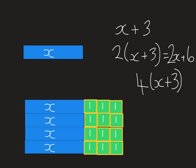So what's that overall? How many x's do I have? 4x plus how many 1's? 4 times 3. 12. Because I've got 3 here, and 4 lots of it. 4 times 3.